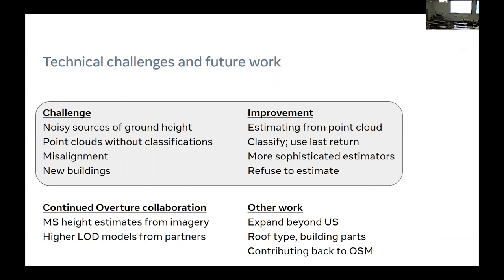During this work we encountered a lot of challenges: noisy ground heights, point clouds without classification, misalignments, and new buildings. For point clouds without classification — where there's no separation between building and non-building objects — we're working on our own classification methods combined with using last-return points of the LiDAR. For noisy ground heights, some buildings sit on elevated terrain causing huge predicted heights, so we're working on estimating ground heights from the terrain point cloud to get more accurate building heights.